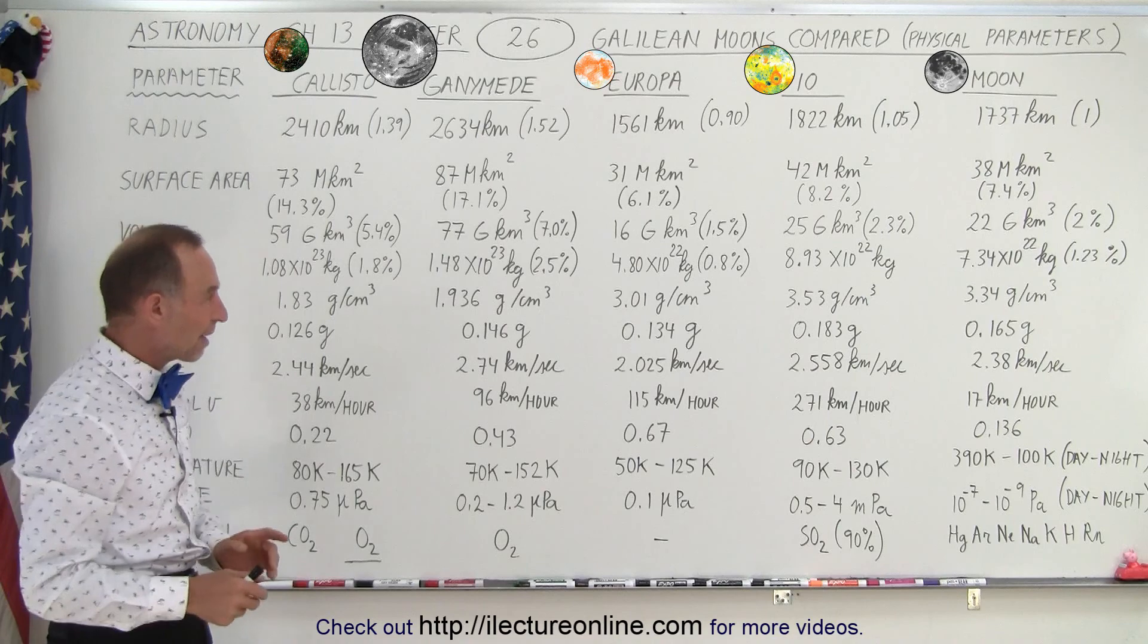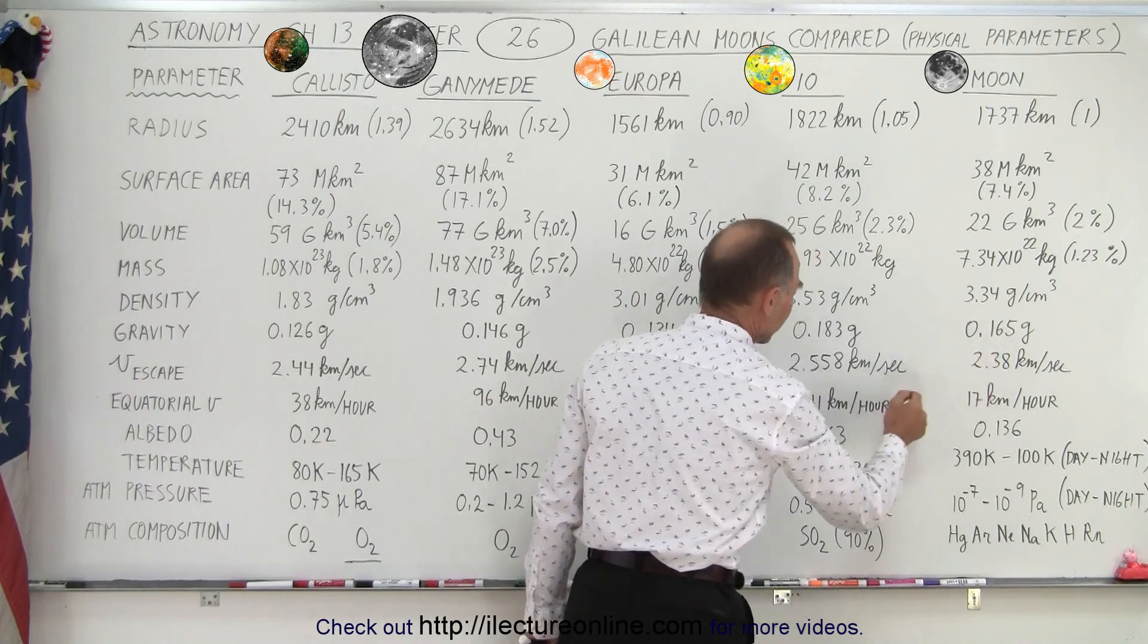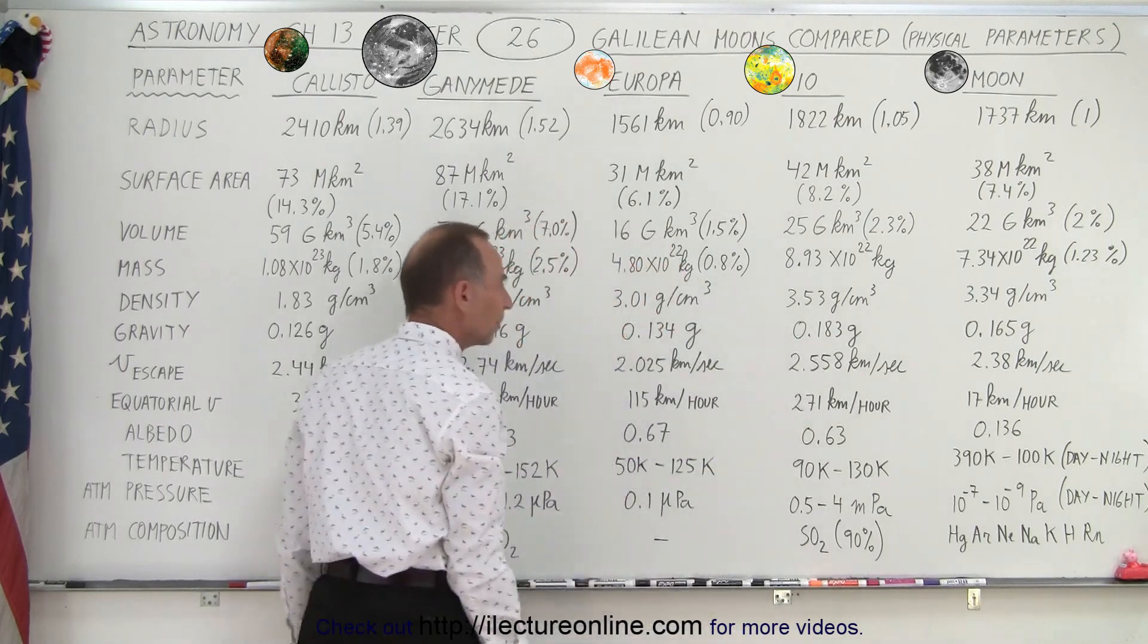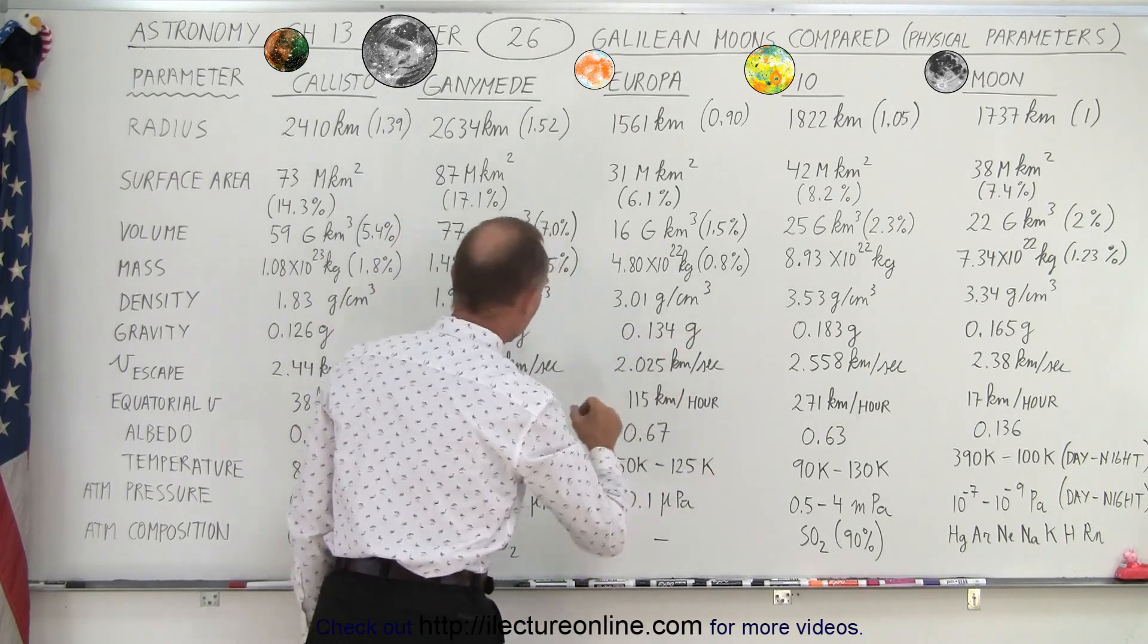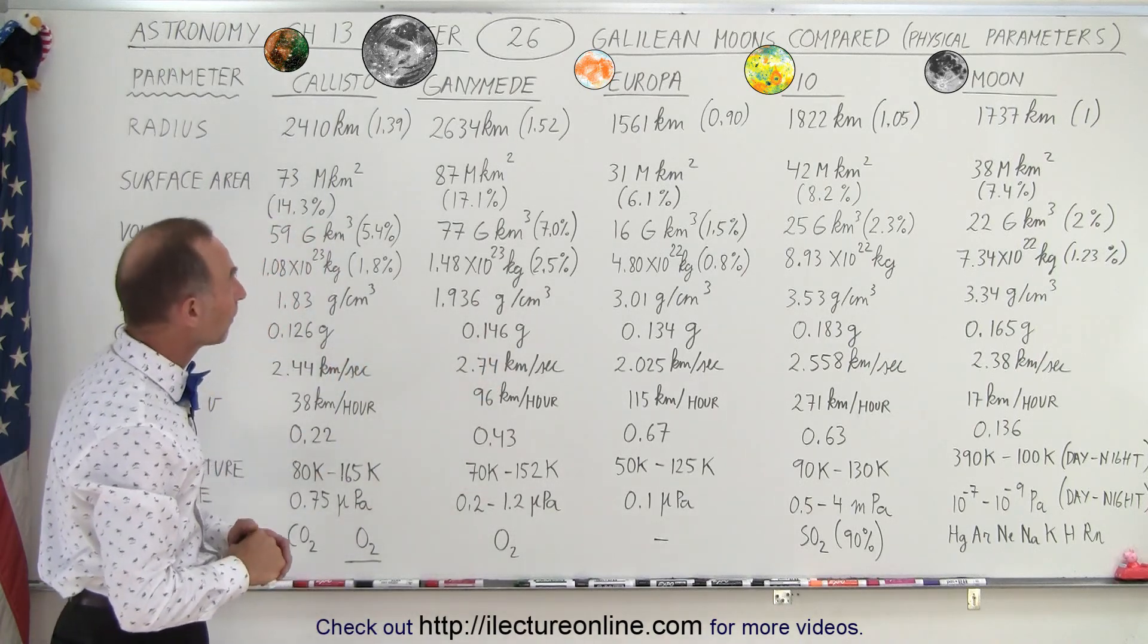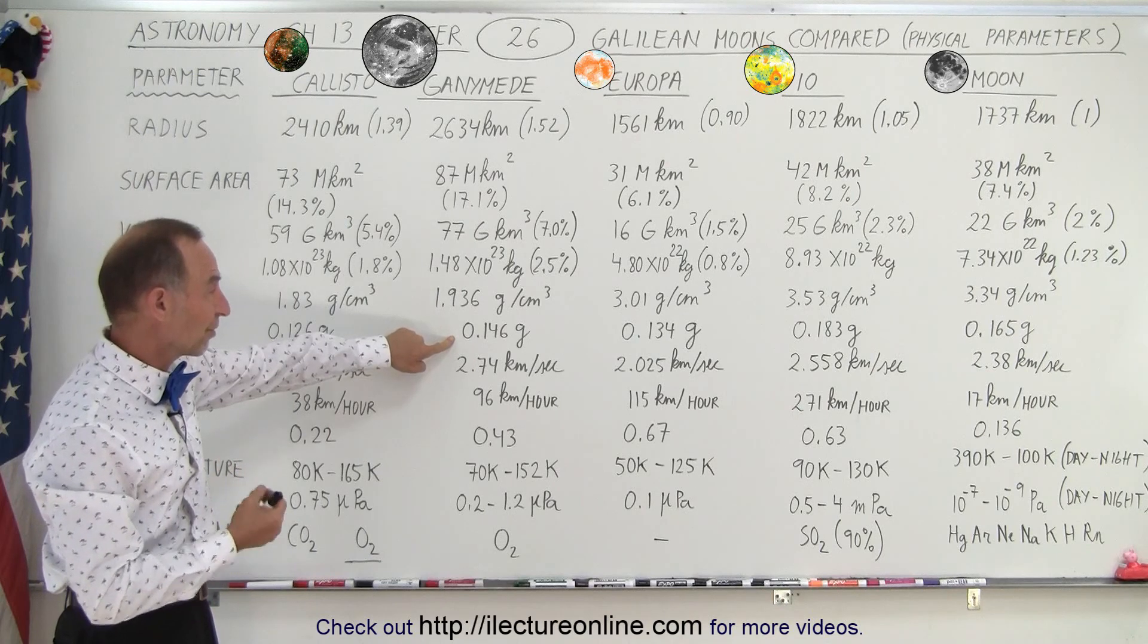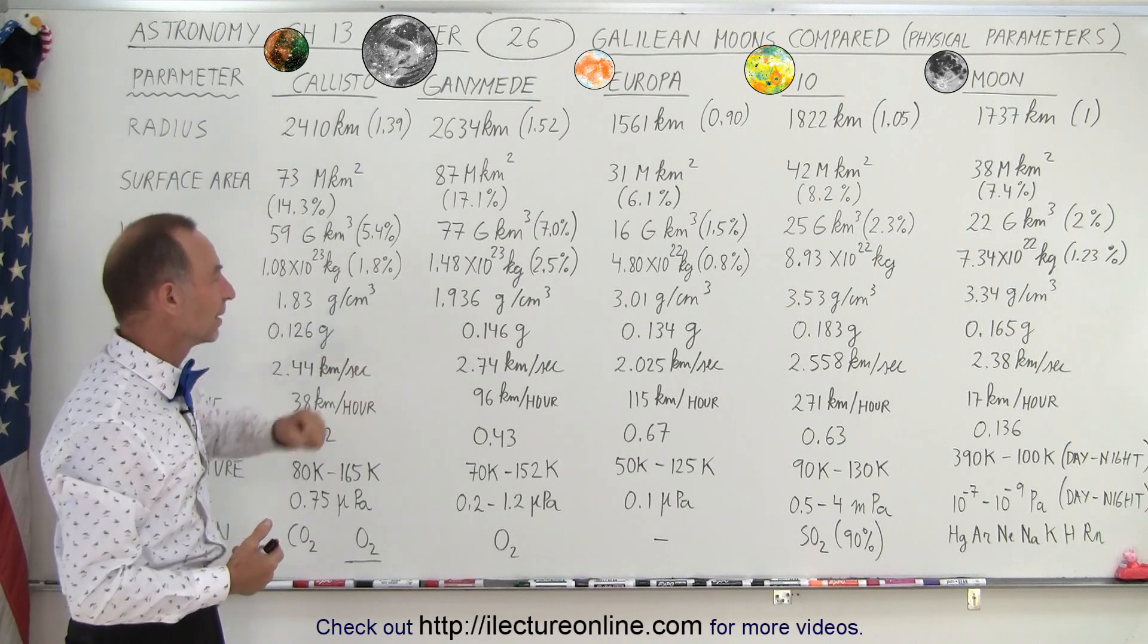The average surface gravity is all roughly about the same. This is 16.5% the gravitational force on the Earth. 18.3%, so notice Io with a greater density and slightly bigger moon, we see that the gravitational force is a little bit bigger. 13.4% for Europa, 14.6% for Ganymede and 12.6% for Callisto. Now notice, even though it's a very large moon with a much greater mass, since the density is so much lower, the gravitational force on the surface is actually weaker. So it would be easier to lift off from the moon.